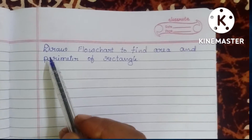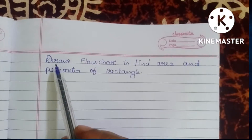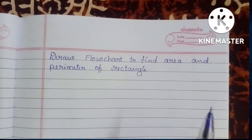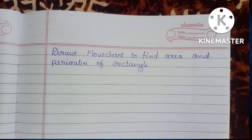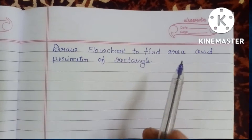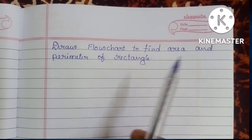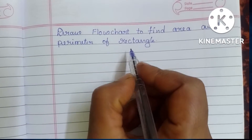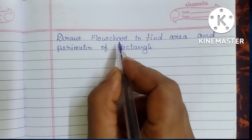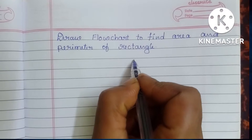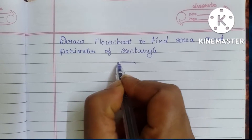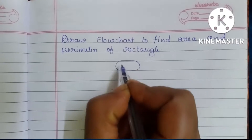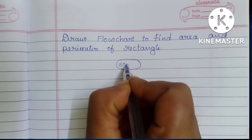In this video we're going to learn how to draw a flowchart to find the area and perimeter of a rectangle. A flowchart is a graphical representation of an algorithm. It always starts with a START statement, which is written within an oval shape — so draw an oval shape and write the START statement.